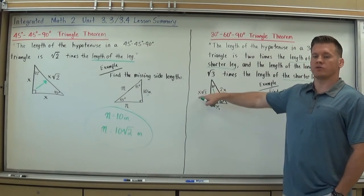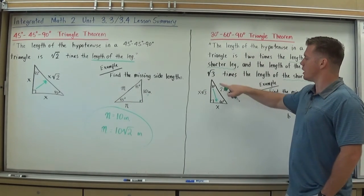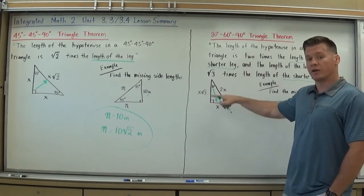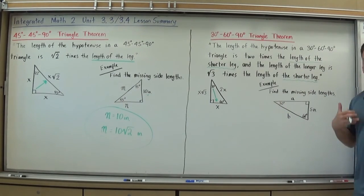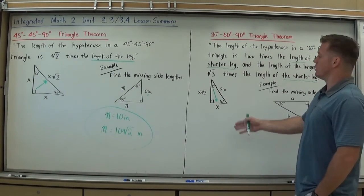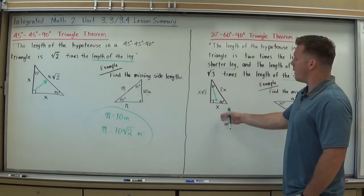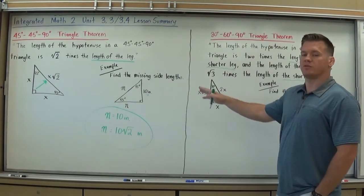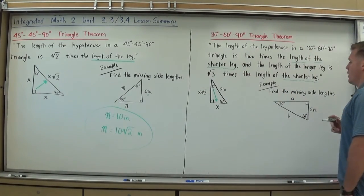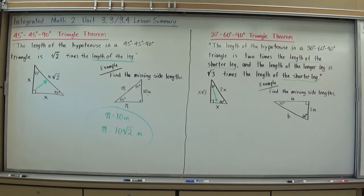Restating it really can help you memorize. Just make sure you go in the right order: opposite 30°, opposite 60°, opposite 90°. I'm going to use that now to find the missing side lengths in a given triangle.